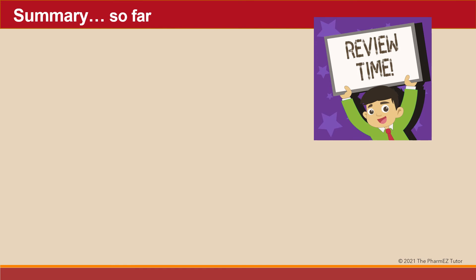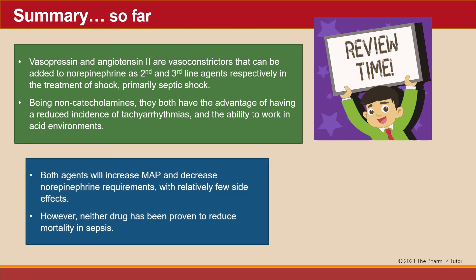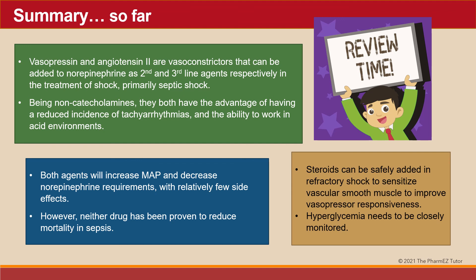In summary: vasopressin and angiotensin II are vasoconstrictors that can be added to norepinephrine as second- and third-line agents respectively in the treatment of shock, primarily septic shock. Because they are non-catecholamines, they have a reduced incidence of tachyarrhythmias and can work in acidic environments. Both agents increase mean arterial pressure and decrease norepinephrine requirements with relatively few side effects. However, neither drug has been proven to reduce mortality in sepsis. Steroids can be added safely in refractory shock to sensitize vascular smooth muscle and improve vasopressor responsiveness, but hyperglycemia must be closely monitored.